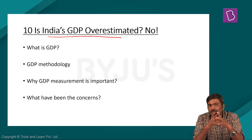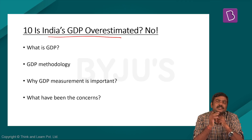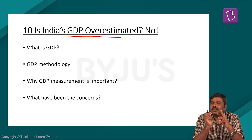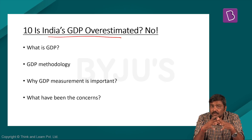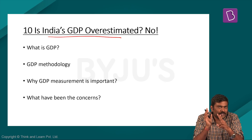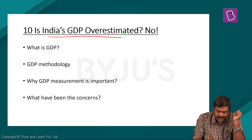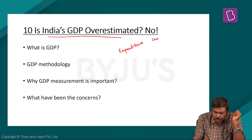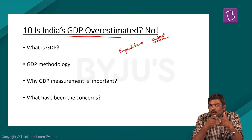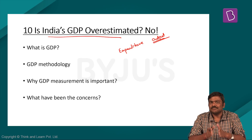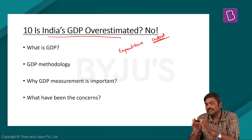GDP for any economy can be calculated through three methods: the income method, the production or output value method, and the expenditure method. In case of India, we follow two methodologies — the expenditure method and the output value method. Under the output method, the total market value of output is considered, which is essentially the concept of GDP itself.